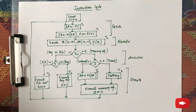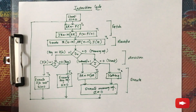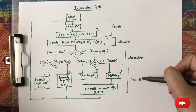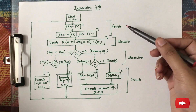The topic for this video is the instruction cycle. A program has many instructions to be executed, so when a program is executed, every instruction present in that program has to be executed. Each instruction goes through a cycle, and that cycle is divided into four phases: fetch, decode, decision, and execute.